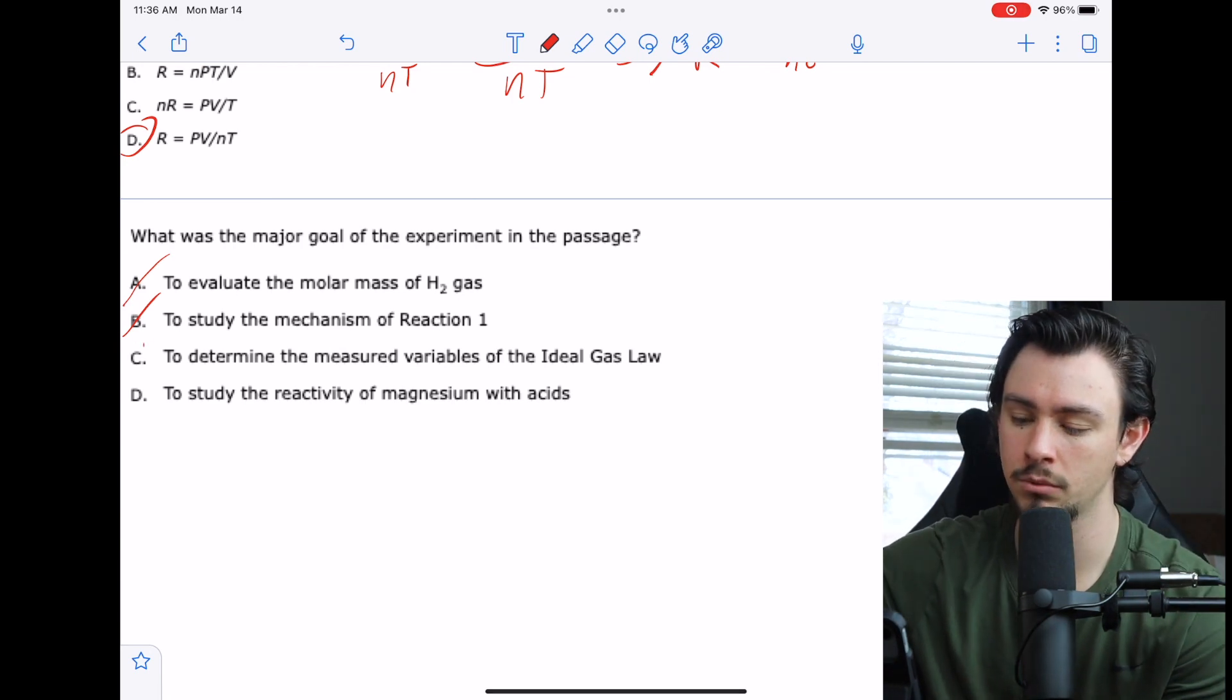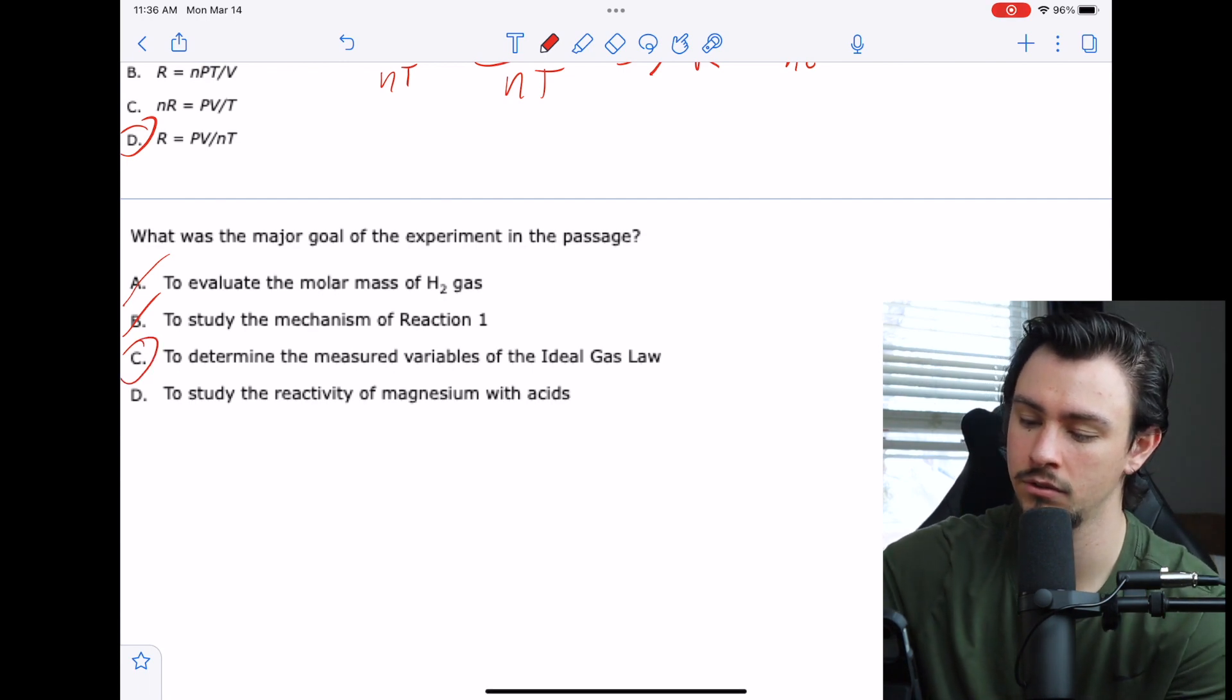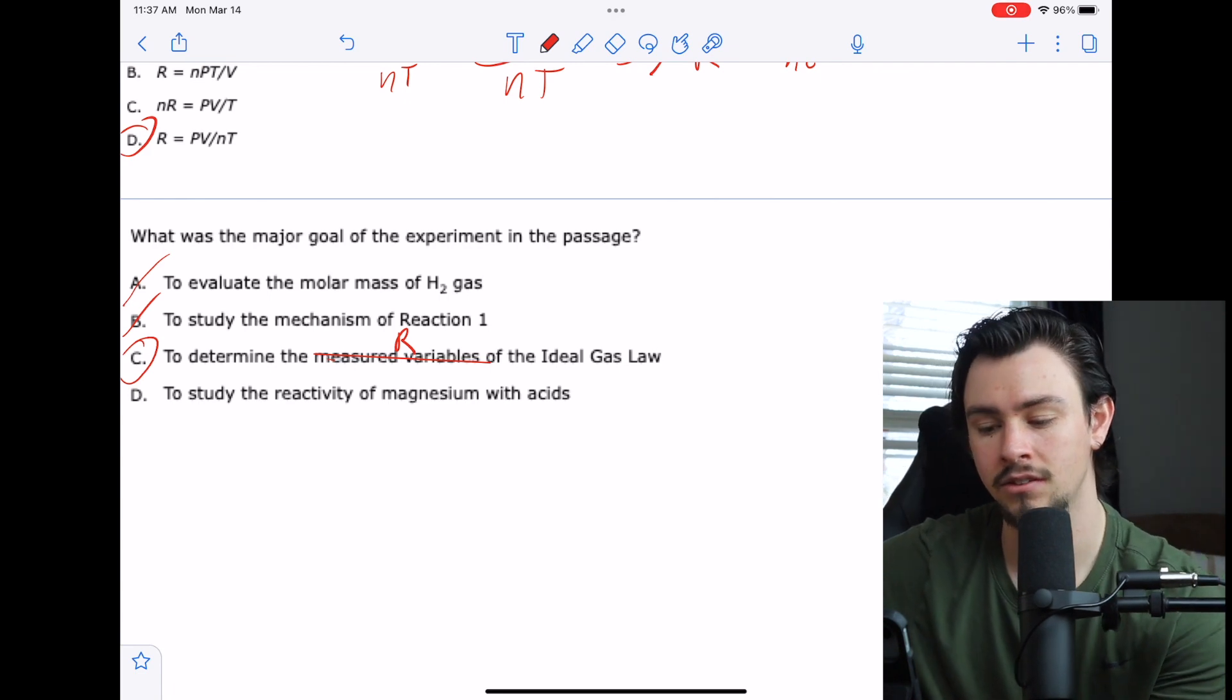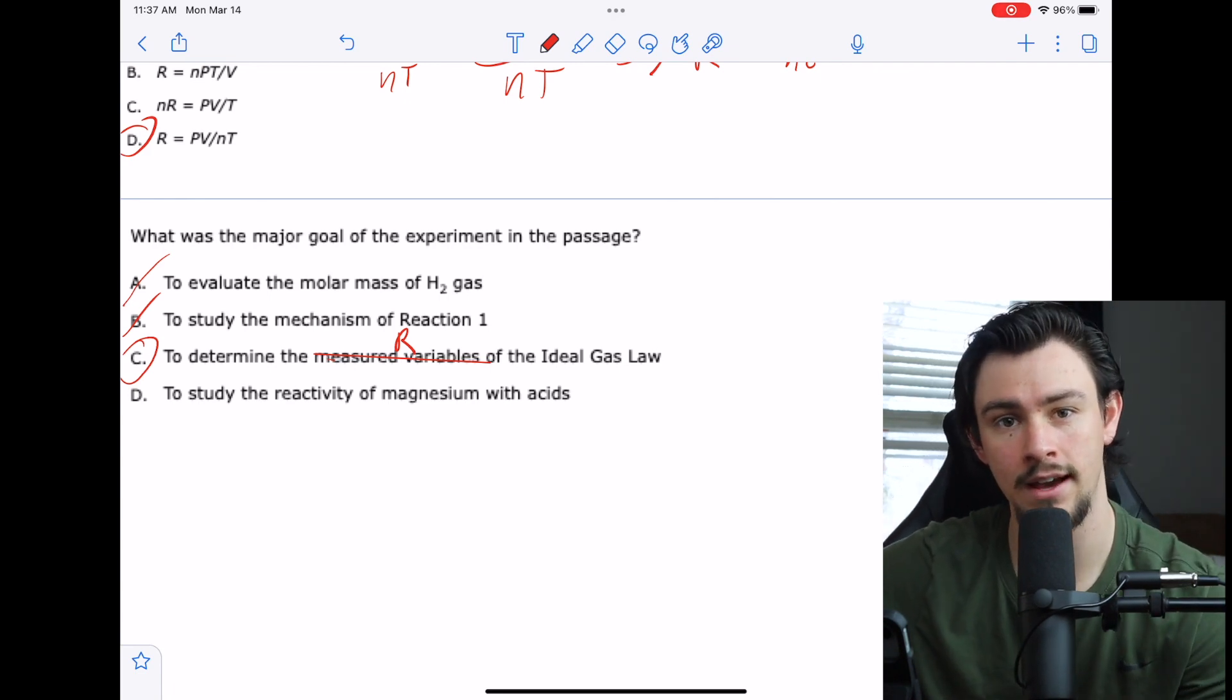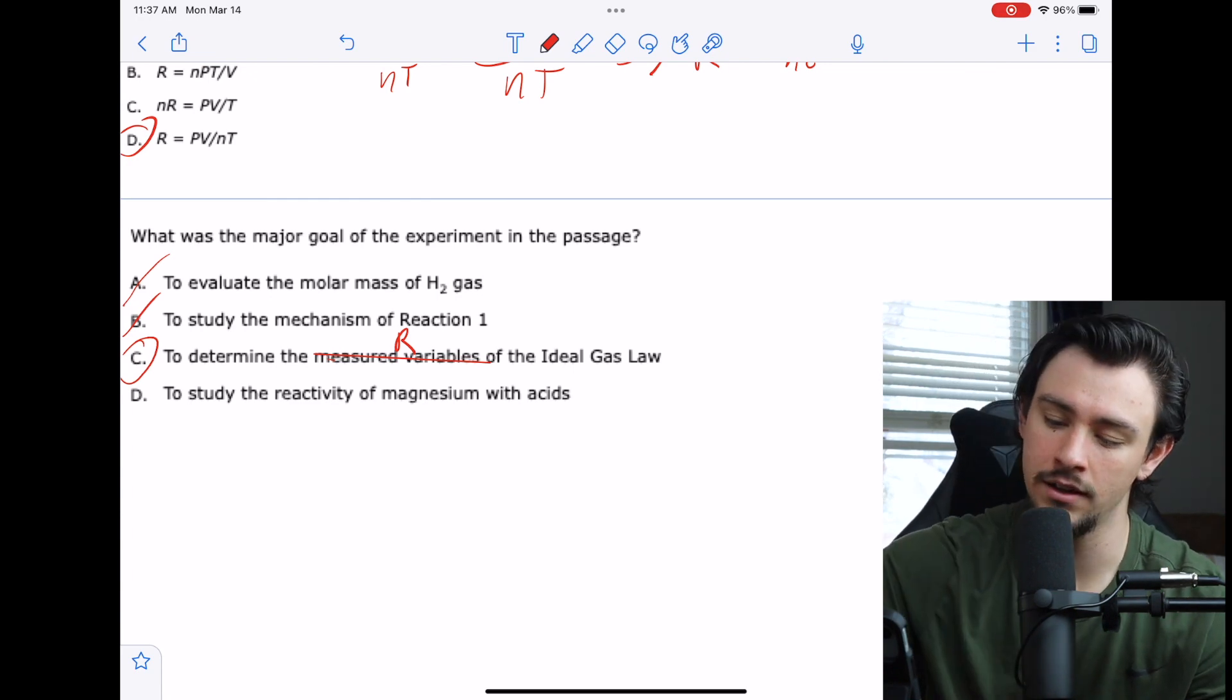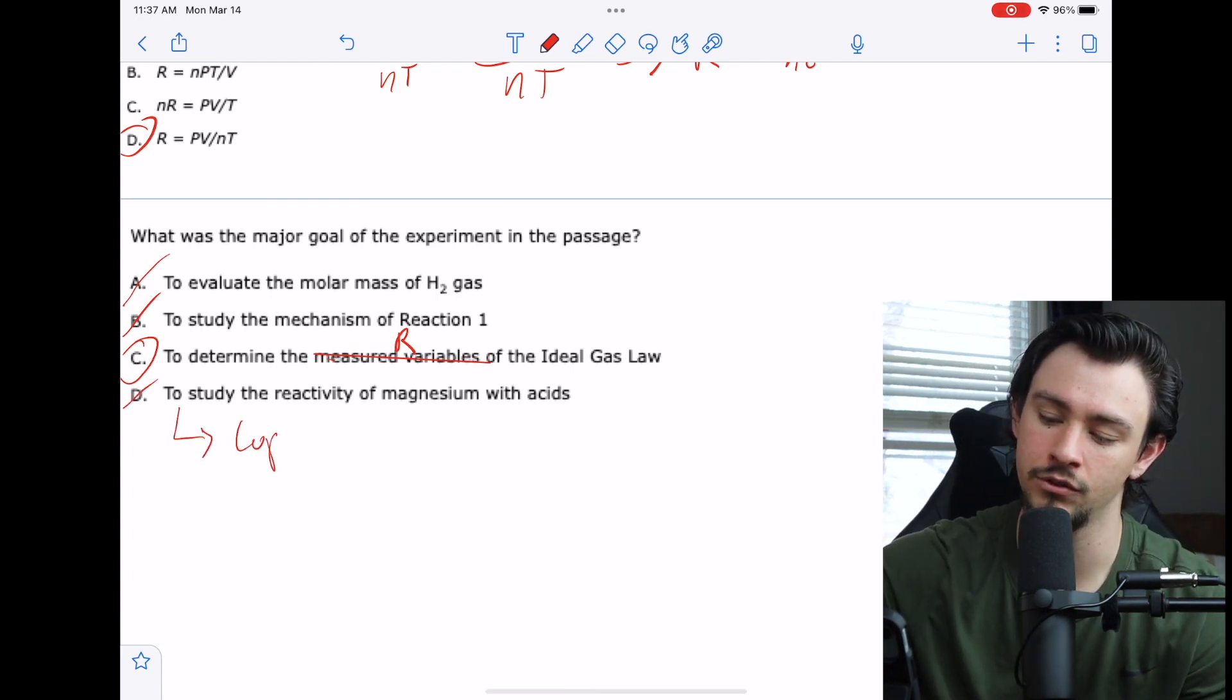C says to determine the measured variables of the ideal gas law. Yeah, for sure, right? That's what we're doing here. I mean, if I could literally replace this here with R, it would be saying the same thing. So I like C. And then D says to study the reactivity of magnesium with acids. No, we did react magnesium with acids, but that was not the goal. This right here is a cop out answer choice. You'll see this on our video called recognizing traps. And if you're curious about how to do any of these strategies, like how I'm simplifying the question or rephrasing it every single time I read it, how I'm actually making these flow charts, even though this one wasn't very involved or how I'm going through the passage and actually pulling out the relevant material on how to do that in a timely fashion, make sure to check out the strategies playlist that we do.